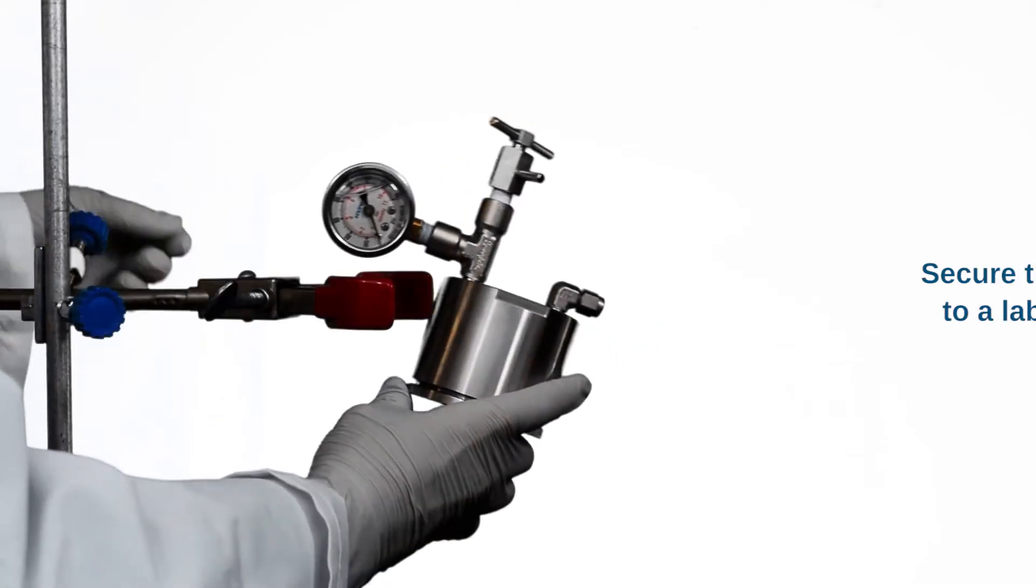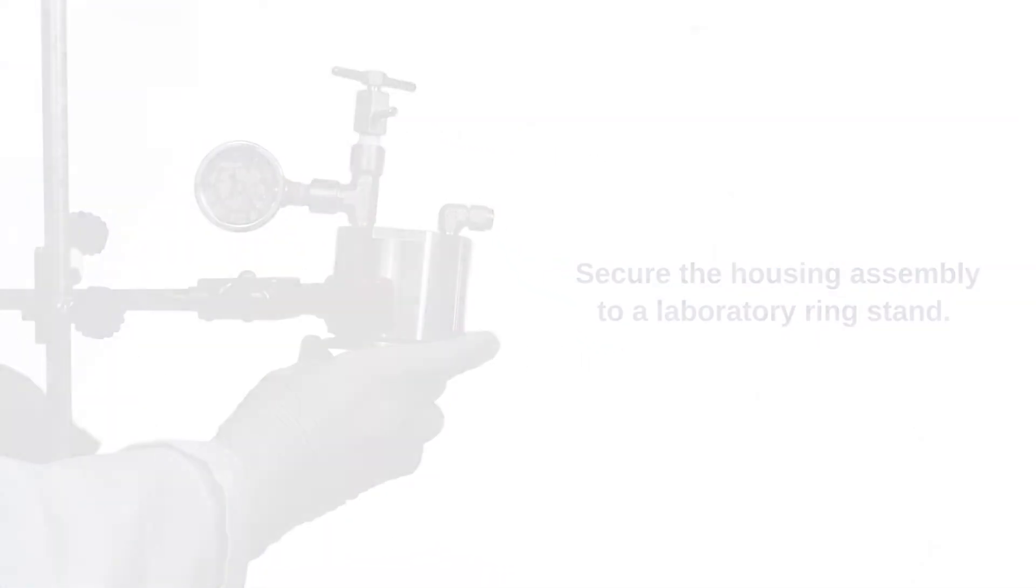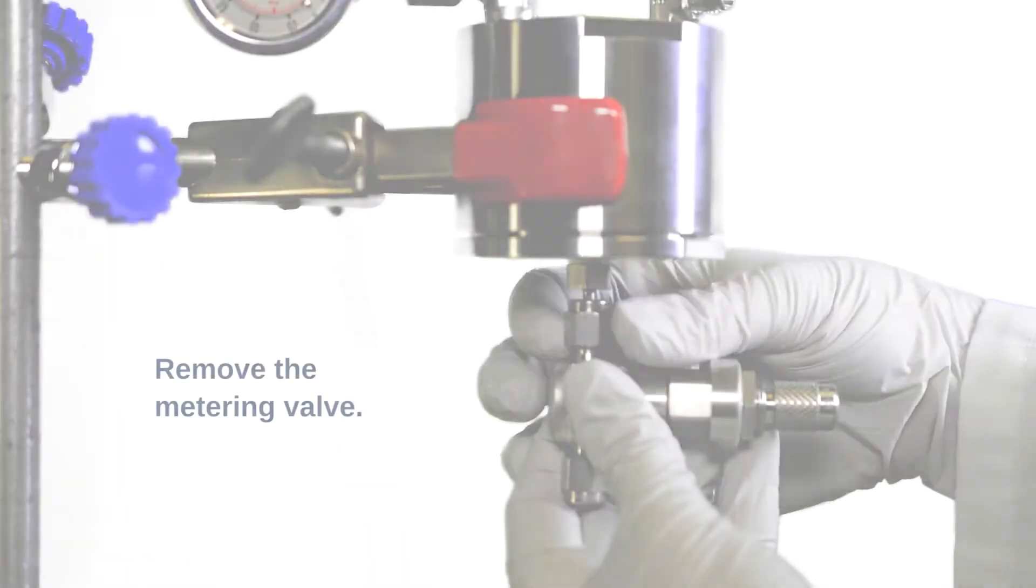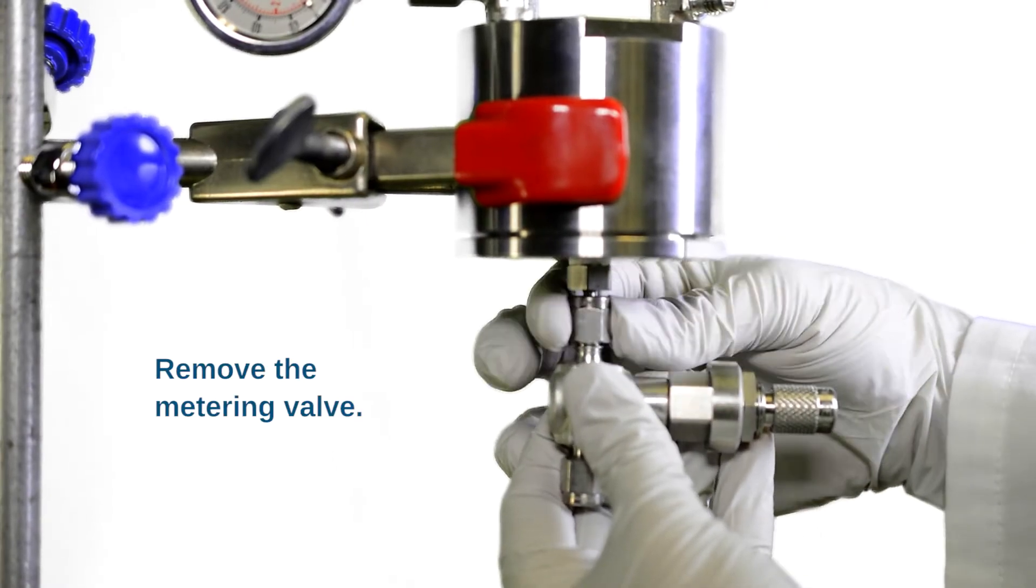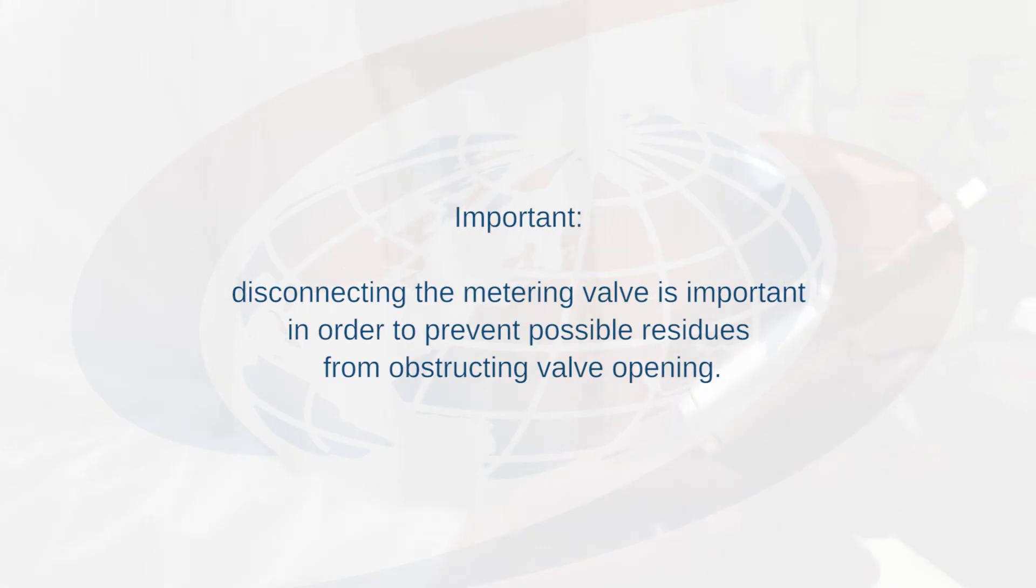Secure the housing assembly to a laboratory ring stand. The air bleed valve should be at the top of the assembly. Remove the metering valve. Disconnecting the metering valve is important in order to prevent possible residues from obstructing valve opening during conditioning.